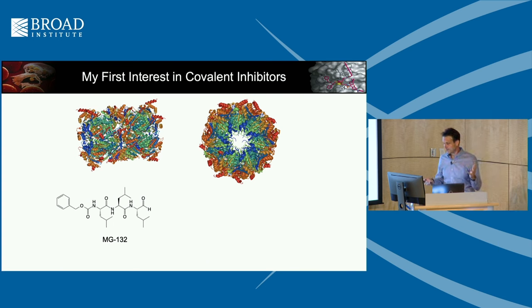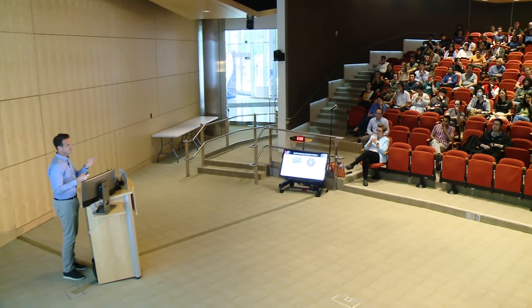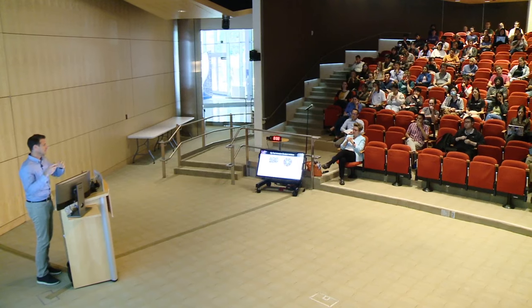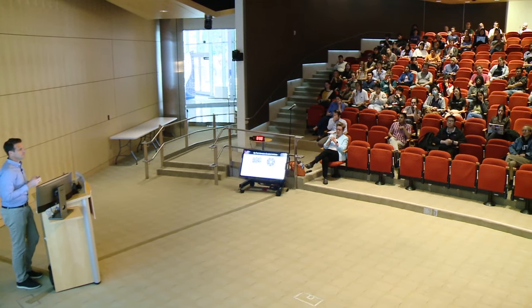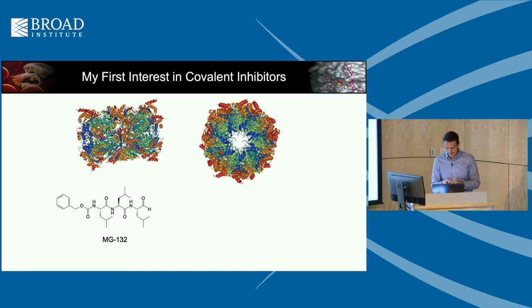It worked — it was a good inhibitor. It was used by Hidde's lab to map out the ERAD pathway by basically blocking the proteasome, allowing them to see unfolded MHC molecules that were reverse translocated from the ER into the cytosol and degraded. Because they had an antibody that could detect unfolded MHC molecules, they were able to map this pathway, which was totally unknown at the time. It was an exciting use of a simple small molecule.